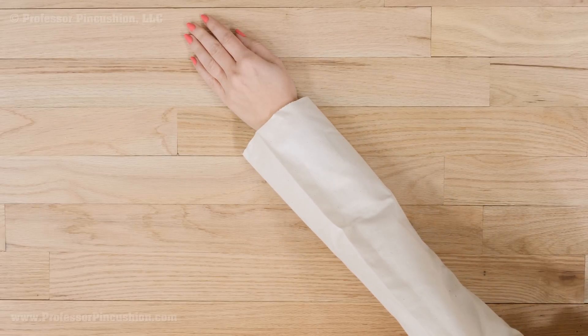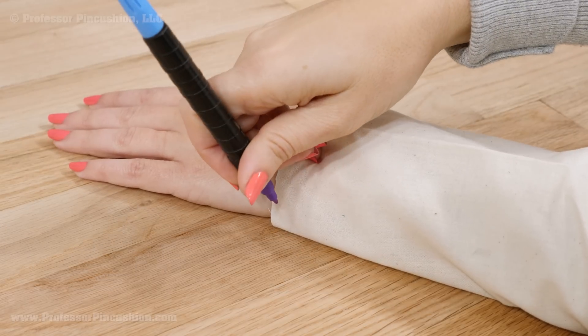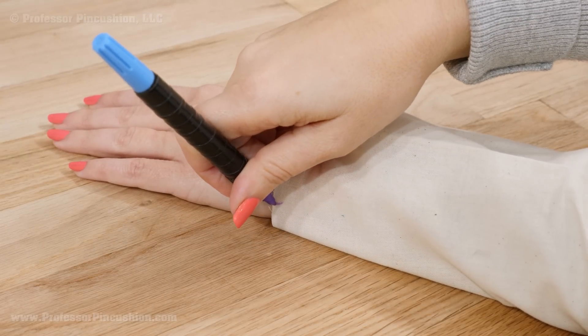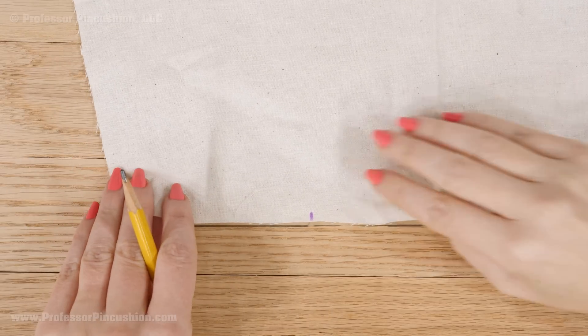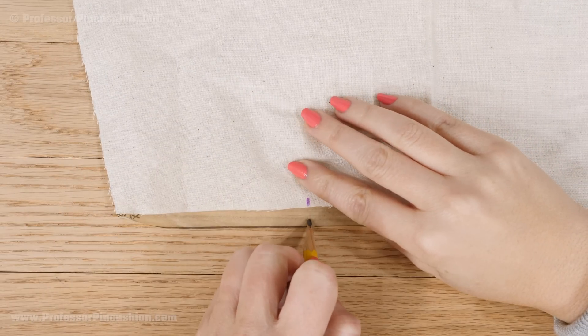It's also a good idea to check the length of the sleeve so you can adjust the pattern since it will be nearly impossible to adjust the length once the zipper is in. Take out the basting stitches of the muslin and transfer your mark to your pattern.